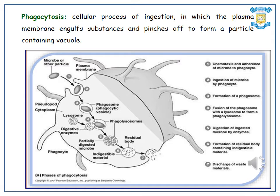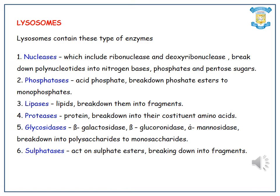These are all the major processes of phagocytosis. The lysosomes contain several types of enzymes, namely nucleases, phosphatases, lipases, proteases, glycosidases, and sulfatases. The nucleases, which include ribonucleases and deoxyribonucleases, break down polynucleotides into nitrogen bases, phosphates, and pentose sugars. Phosphatases, also known as acid phosphatases, break down phosphate esters to monophosphates. Lipases break down lipids into fragments.